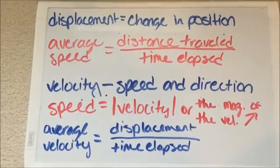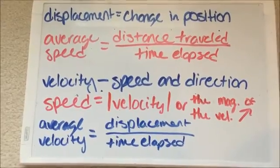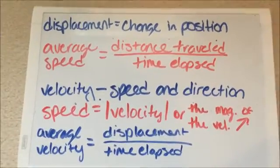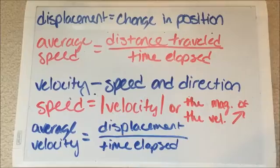Here are some basic definitions that you need to know. Displacement is the change in position. Average speed is distance traveled over time elapsed.